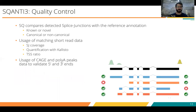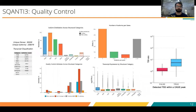SQANTI3, during the quality control step, can also take CAGE data or poly-A peaks to validate the 5' and 3' ends. In this case, we can try to address the completeness of the isoforms identified using IsoSeq. Here are some examples of the results obtained using SQANTI3 quality control, which prints a big PDF with a lot of plots. We used a WTC11 dataset that was sequenced for the LongGas project.